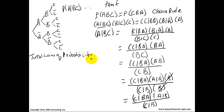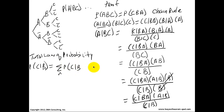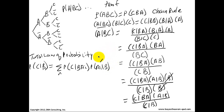Now we can use the total law of probability to operationalize this. It goes: probability of C given B equals the sum over n of probability of C given B, A-sub-i, times probability of A-sub-i given B. Right here, this is the posterior probability from this network.